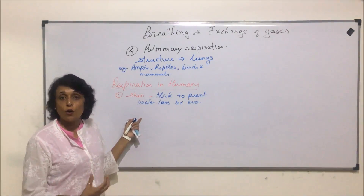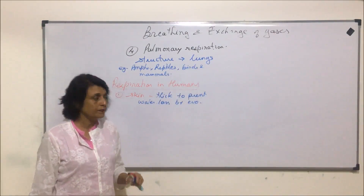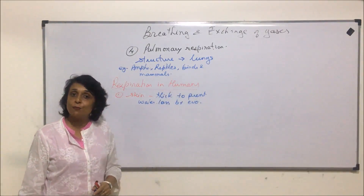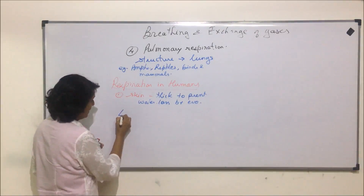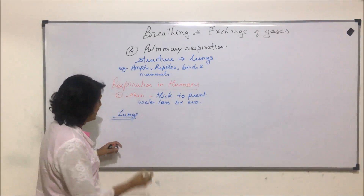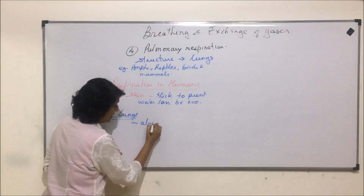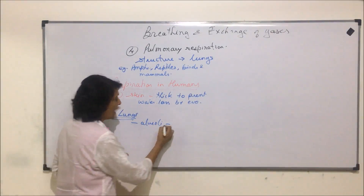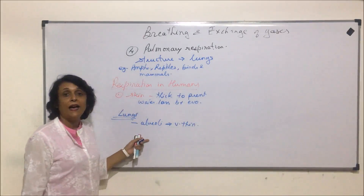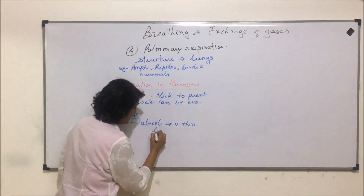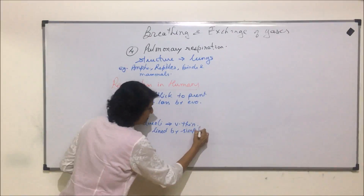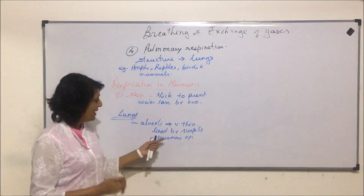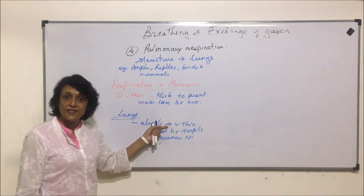Now let us look at the structure of lungs — do lungs fulfill all those characteristic features which must be shown by a respiratory surface? Comparing lungs with skin: lungs have the alveoli, which is the area where exchange of gases takes place. Alveoli are very thin, lined by only simple squamous epithelium — cells in just one layer, which is the thinnest epithelium — so exchange of gases can take place.